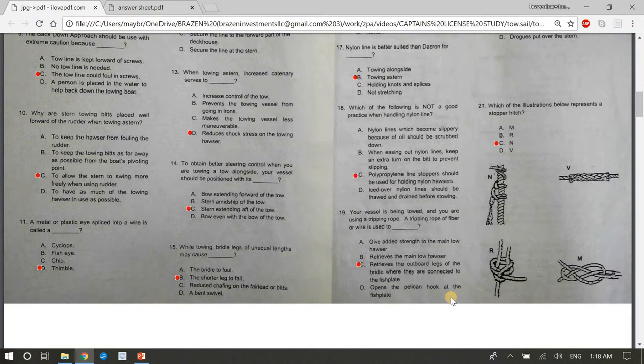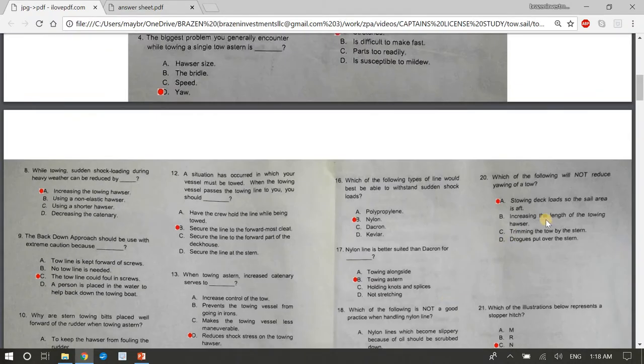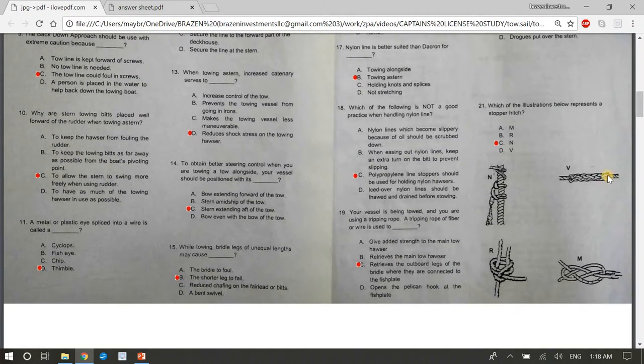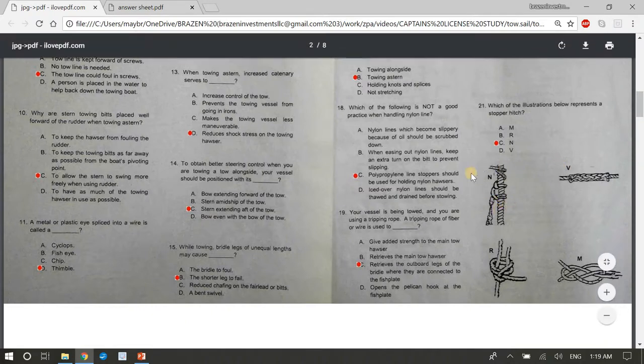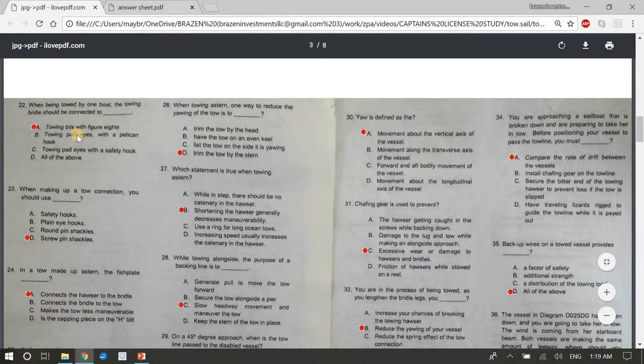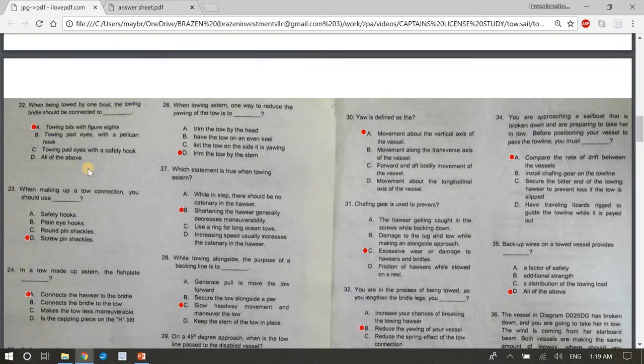Nineteen, your vessel is being towed and you are using a tripping rope. A tripping rope of fiber or wire is used to answer C, retrieves the outboard legs of the bridle where they are connected to the fish plate. 20, which of the following will not reduce hot yawing of a toe? The answer is A, stowing deck loads so the sail area is aft. 21, which of the illustrations below represents a stopper hitch? The answer is C. It's a stopper hitch. 22, when being towed by one boat the towing bridle should be connected to blank. The answer is A, towing bits with figure eights.